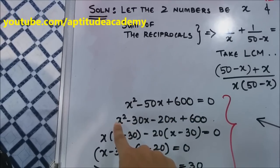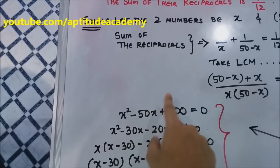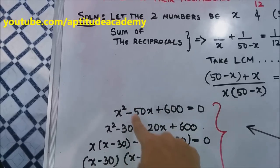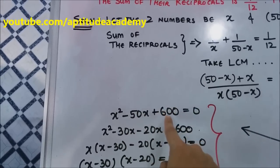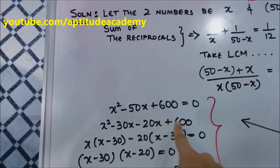So I've divided it: x² - 30x - 20x + 600. You could have divided it as -60 and +10, but that will not work, because -60 + 10 will give you -50, but when you multiply -60 and +10, it will give you -600. So, x² - 30x - 20x + 600.